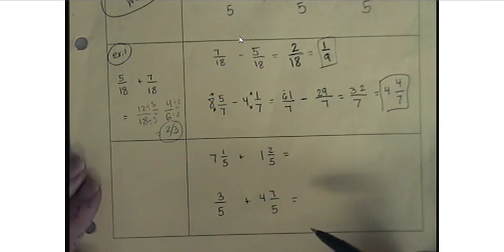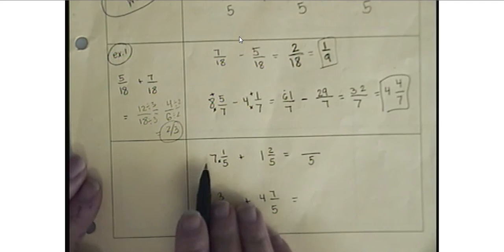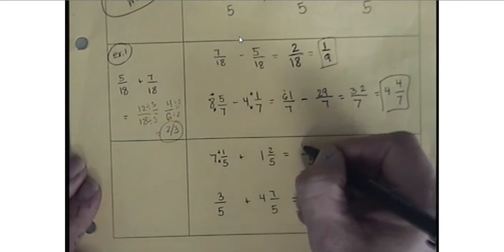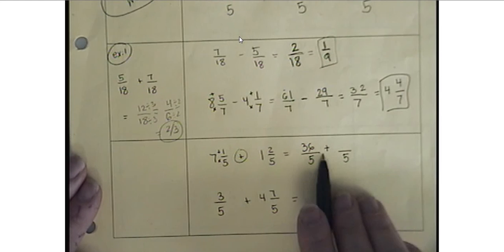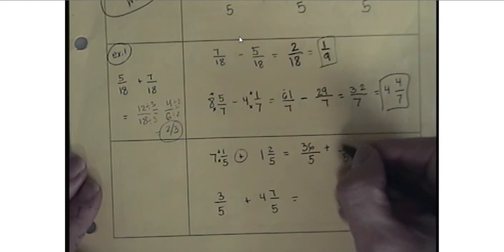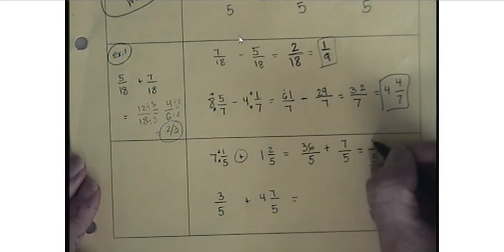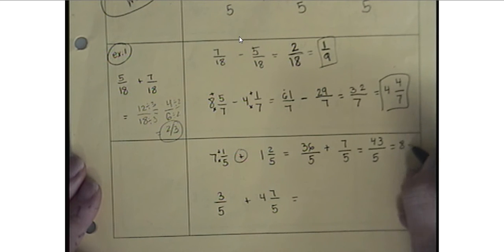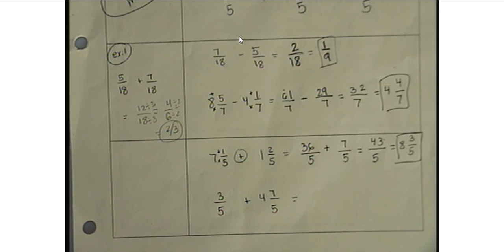Next one, we have another two mixed numbers. So we'll continue practicing with converting to improper fractions. 5 is the denominator. 7 times 5 is 35 plus 1, 36 on the top. Then next one is another 5. We're adding, we have plus sign here. So 1 times 5 is 5 plus 2, 7/5. 5 is the common denominator. 36 plus 7 will give us 43. 5 goes into 43 8 times. 8 times 5 is 40. So from 40 to 43, we have 3 left. 8 and 3/5 will be my final answer for this one.